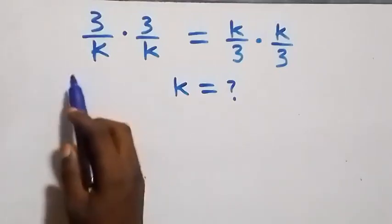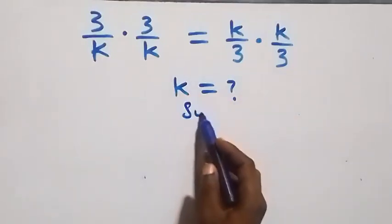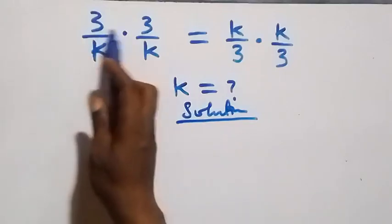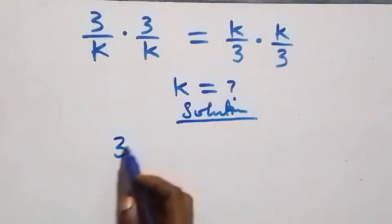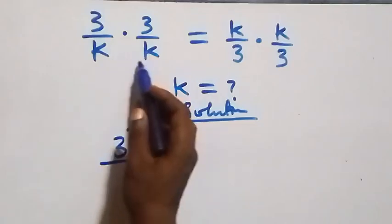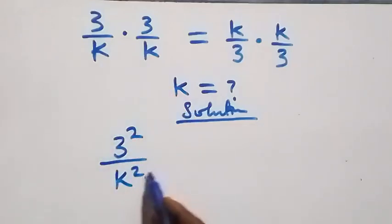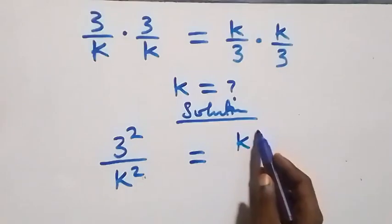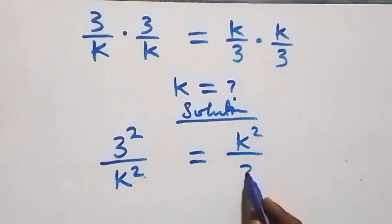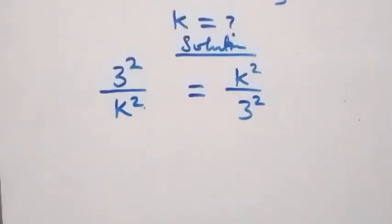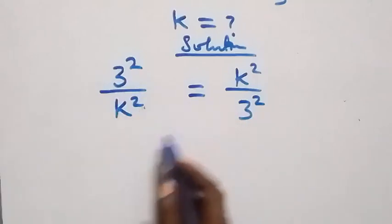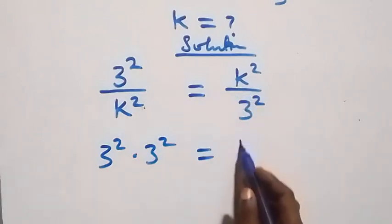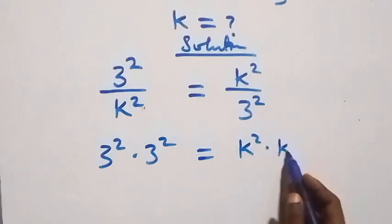Hello, welcome. Here's how to solve this nice algebra problem. From what we have, we can multiply directly: three times three is the same as three squared, over k times k which is k squared. Then equals k times k, which is k squared, over three times three, which is three squared. From here we can cross multiply: three squared times three squared equals k squared times k squared.